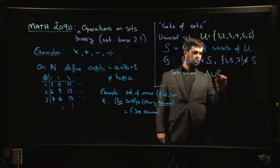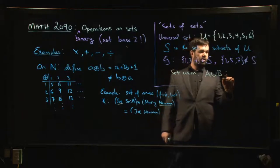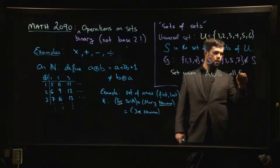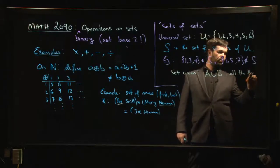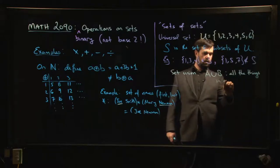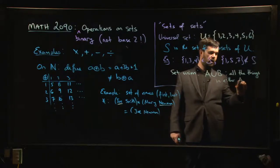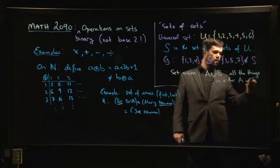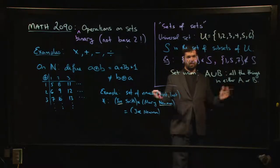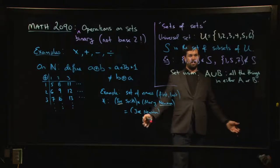There's what's called the union of a set. You use this upside-down U for union, and this is all the things in either A or B.